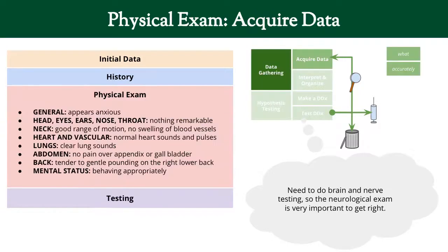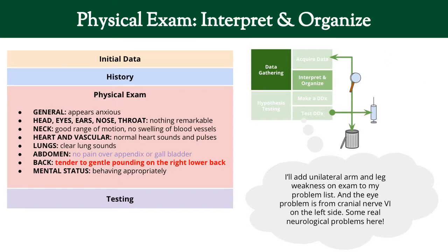Next is the physical exam. We acquire data on everybody: generally she appears anxious. Her head, ears, eyes, nose, and throat are unremarkable. Her neck, heart, and lungs are unremarkable. Her belly shows no pain over where the appendix is and no pain over the gallbladder. Her back is tender when you gently tap on it on the right side, and she's been acting normally.